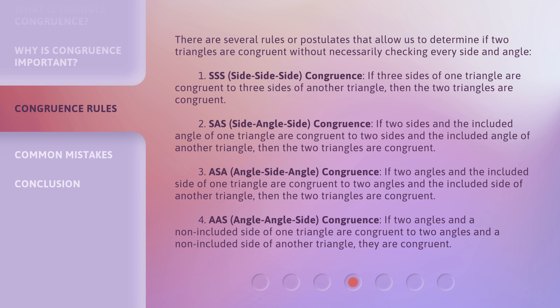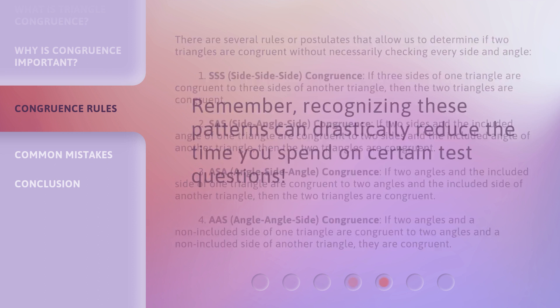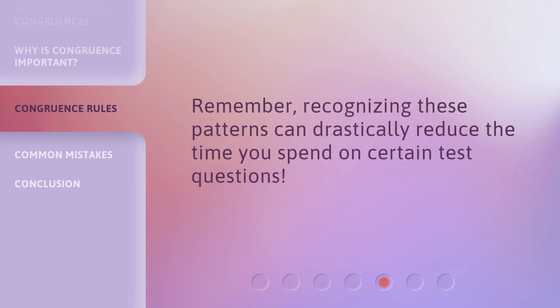The third is AAS: if two angles and a non-included side of one triangle are congruent to two angles and a non-included side of another triangle, then the two triangles are congruent. Remember, recognizing these patterns can drastically reduce the time you spend on certain test questions.